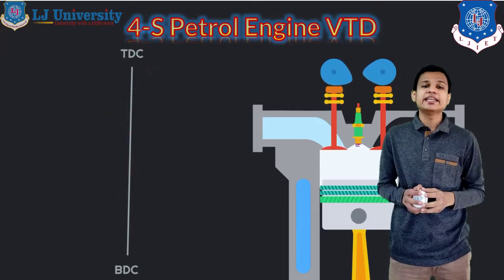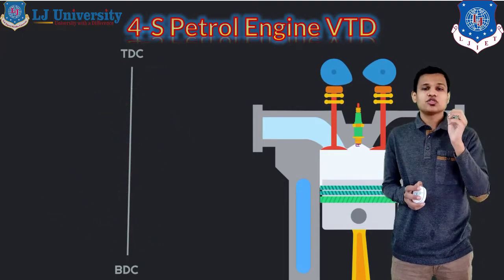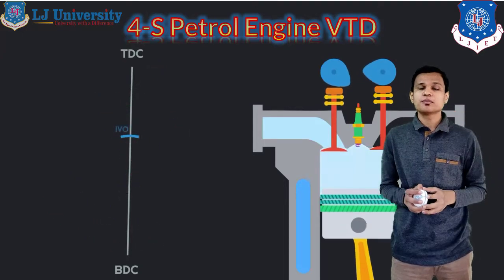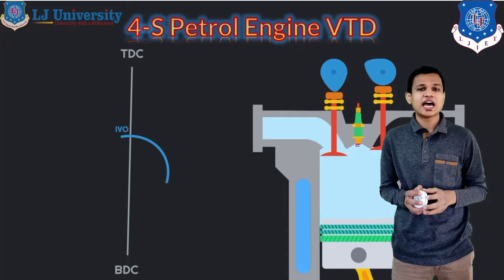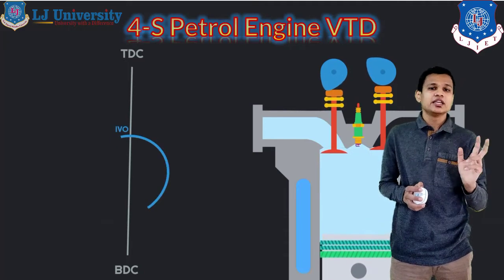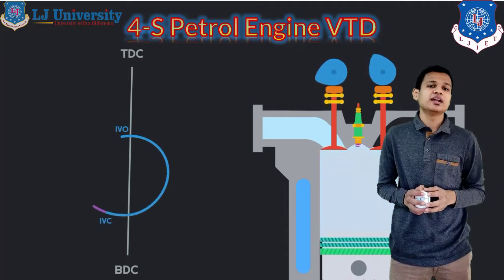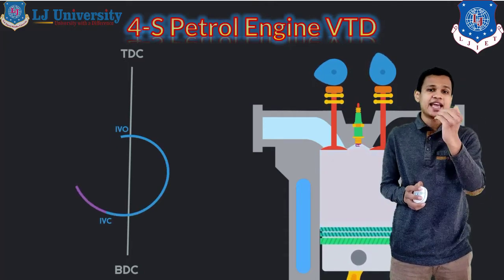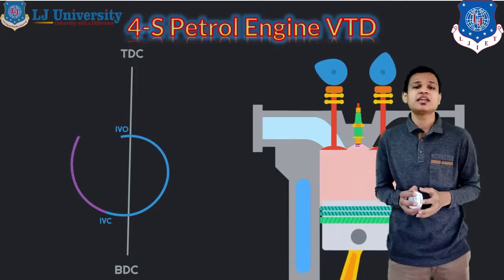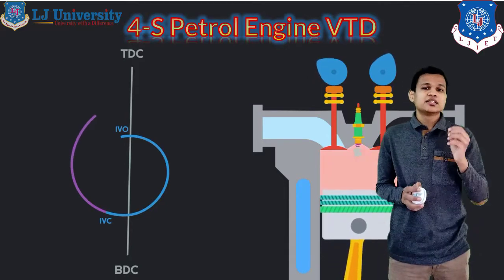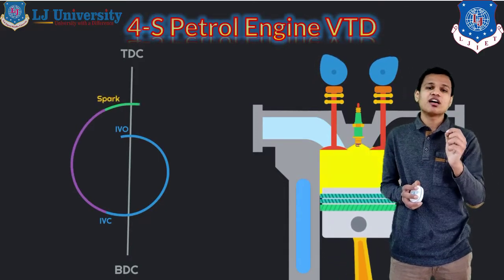After the exhaust valve opens, it is closed after 10 degrees of the TDC. So this was the procedure for the valve timing diagram. You can see both the procedure simultaneously — the engine process and the valve timing as well.